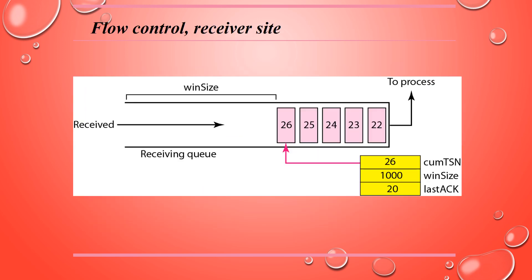In flow control, SCTP, similar to TCP, must deal with units of data — but while TCP uses bytes, SCTP handles two units: bytes and chunks. The values of RWND and CWND are expressed in bytes, while TSN and acknowledgements are expressed in chunks. We can make unrealistic assumptions like no congestion in the network, an error-free network, infinite CWND, and no lost or out-of-order packets, then correct those assumptions to address real flow control.